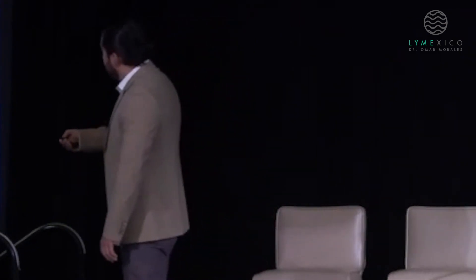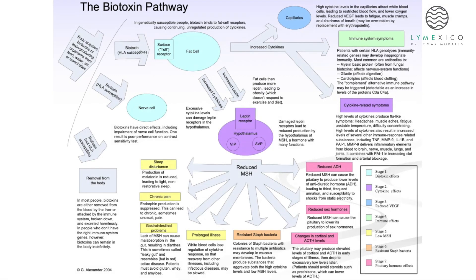If toxins affect the leptin receptors, we have reduced melanocyte-stimulating hormone, which produces a cascade of effects: reduction of antidiuretic hormone regulating thirst, no sex drive, changes in cortisol causing adrenal fatigue, resistant staph bacteria because the immune response is disorganized and atypical, and prolonged illness because the immune system is not organized.